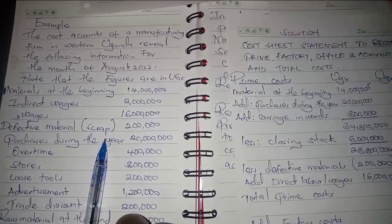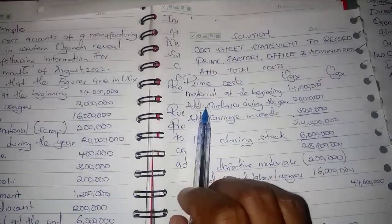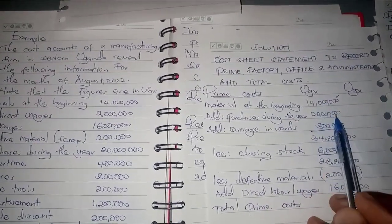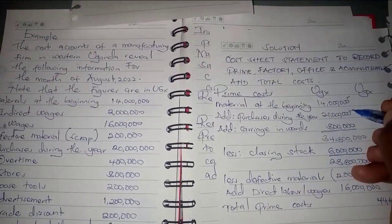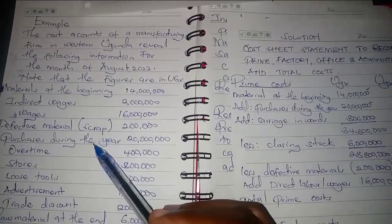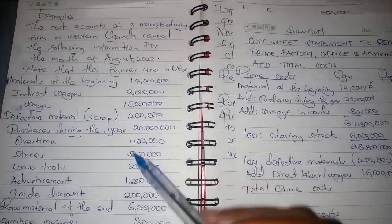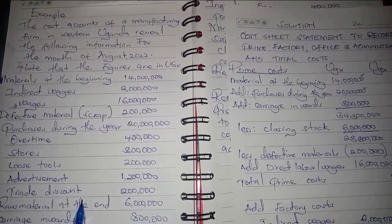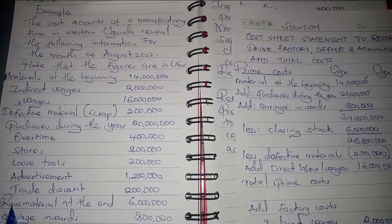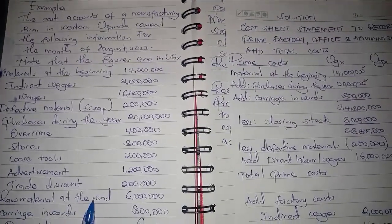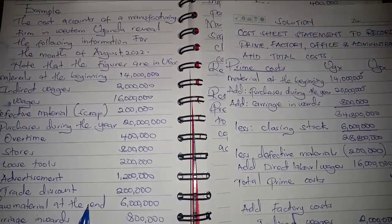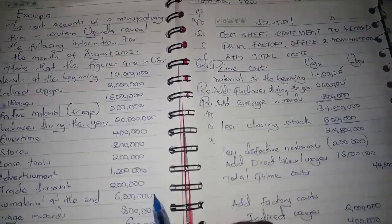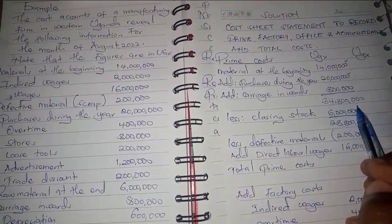We also have materials purchased during the year, so we come here and write 'add purchases during the year.' Then we have raw materials at the end, which is the closing stock. We are supposed to deduct closing stock, which is 6 million, so we put it here as 6M.